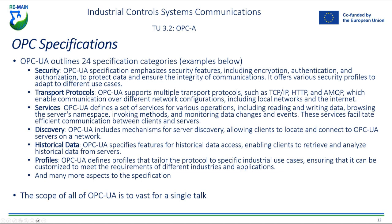OPC UA supports multiple transport protocols such as TCP/IP, HTTP, and AMQP, enabling communication over different network configurations, whether on a local network or routing data externally. The services OPC defines include reading and writing to OPC servers, providing service namespaces, invoking methods, and monitoring data changes and events — facilitating efficient communications between clients and servers. OPC UA also includes a server discovery mechanism, allowing new clients to locate and auto-discover OPC servers on a network. Additionally, it provides specifications for historical data access, which is useful when you need to retrieve data over a period of time.